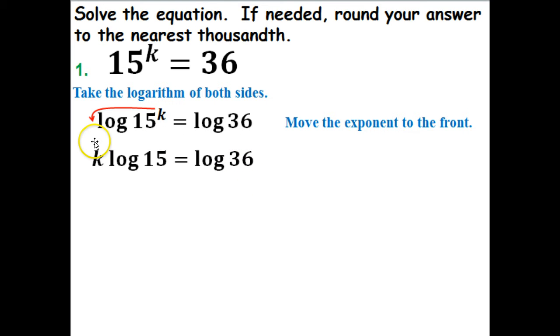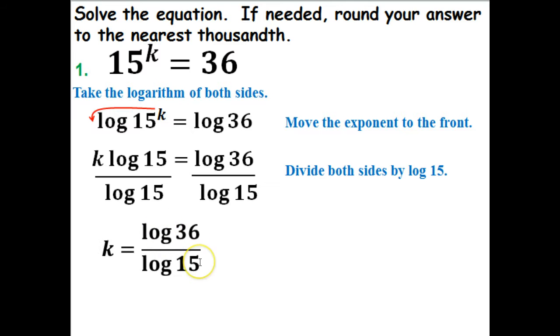Now, the reason why we move this k out in front, you'll see here, is because the object here is to get k all by itself. So in order to do that, we're going to divide both sides by this log base 15. Divide both sides by log base 15. These two will cancel out. So now I have k equals log base 10 of 36 divided by log base 10 of 15.